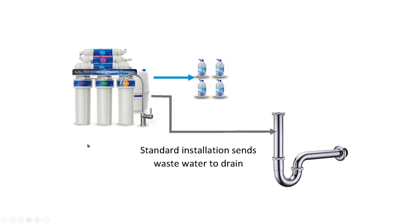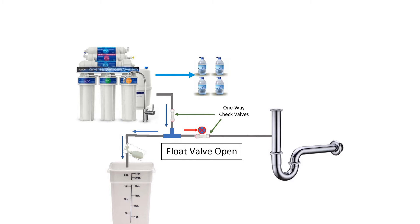That also produces 270 gallons of wastewater every month. The standard installation of my system says to just send the wastewater directly into the drain, but my system works differently. Instead of going directly to the drain, I have a series of fittings. First there's a one-way check valve that only allows water to flow in one direction. It goes into a T — one side goes into my catch tub through a float valve, and the other side goes through another check valve into the drain. When the system is making water and the tank is empty, water flows through the check valve, through the T, and out through the float valve into the tub.